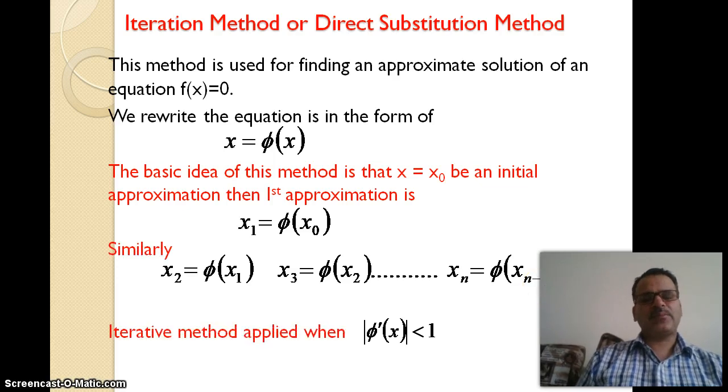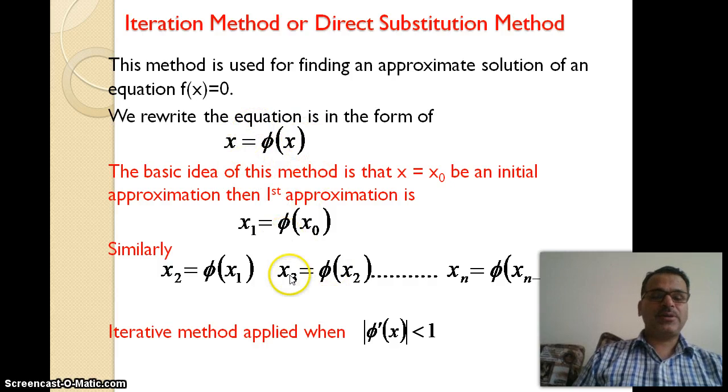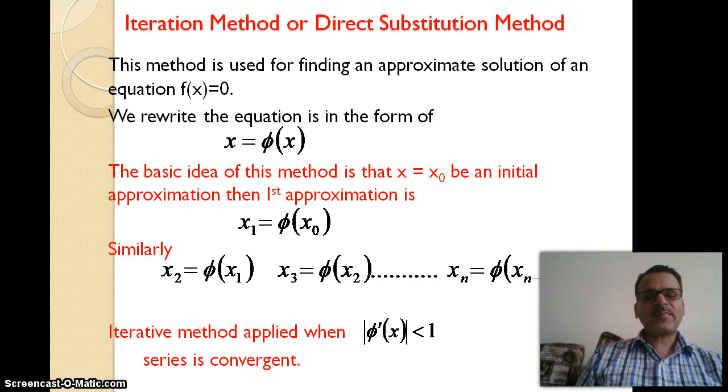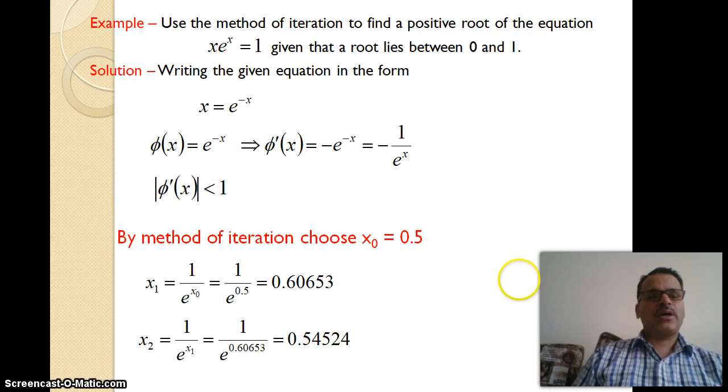The iterative method can be applied when |φ'(x)| < 1, meaning the value is always less than one. We can find the approximate root of the equation but we are not using the interval concept. We write the equation in the form x = φ(x) and check if it's convergent. The iterative method can be applied when |φ'(x)| < 1 and our series is convergent.